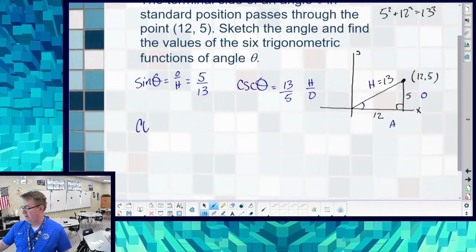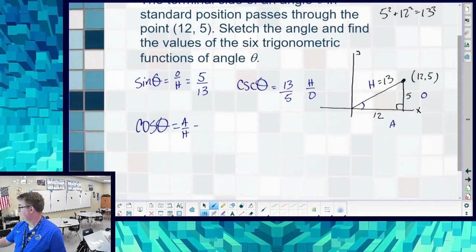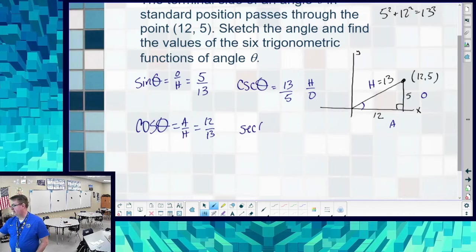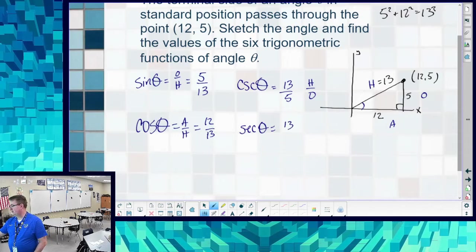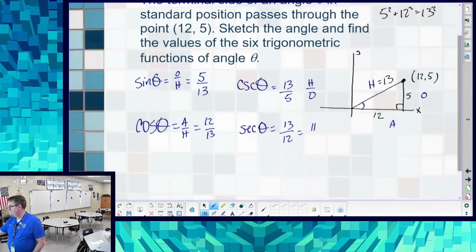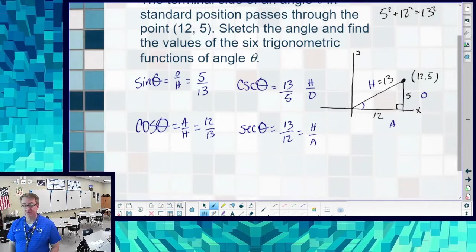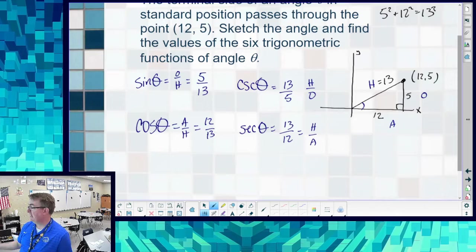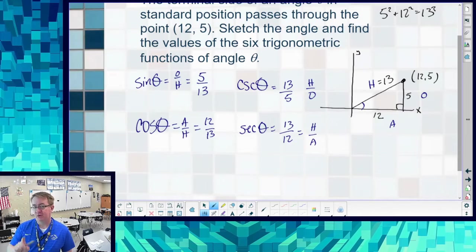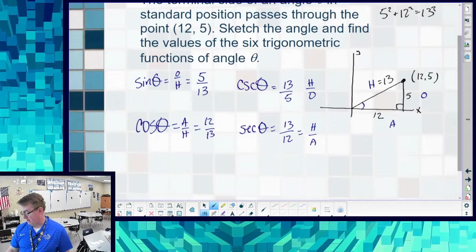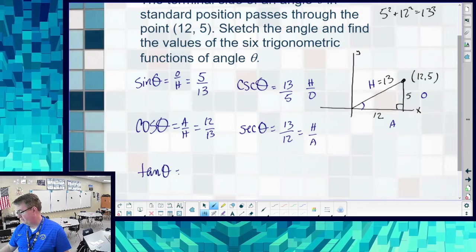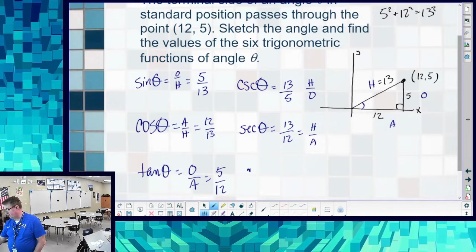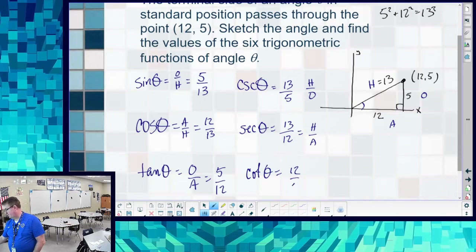Cosine theta, adjacent over hypotenuse. So that is going to be 12 over 13. That means that my secant theta is going to be 13 over 12. Now notice, you probably have noticed in your geometry and algebra careers that sine and cosine always have to be less than 1 because hypotenuse is always the longest side. So since we're doing reciprocals, cosecant and secant are always going to be larger than 1. And when we do graphing, that will come back in spades.